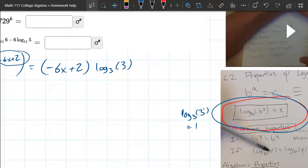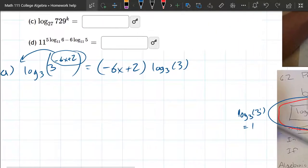In our case, so log₃ of 3 is just 1. You also could have just used that property at the very beginning right here. Instead of bringing the power down, you could have just said this is -6X + 2.